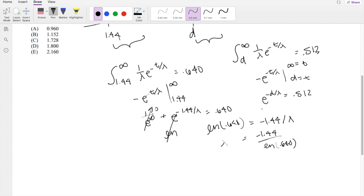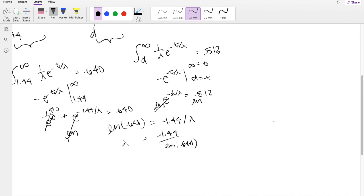Taking the natural log of both sides. You get negative t over lambda is equal to natural log of 0.512.